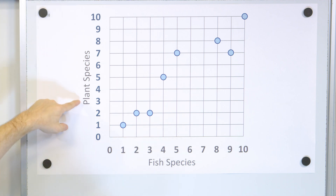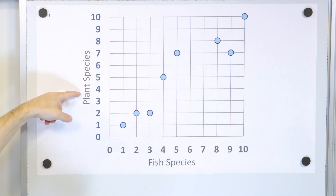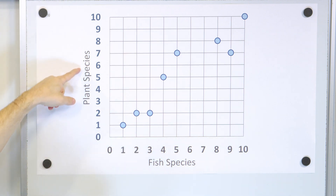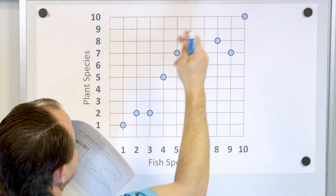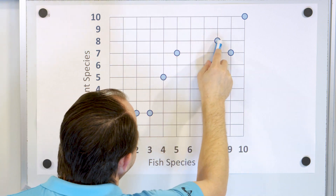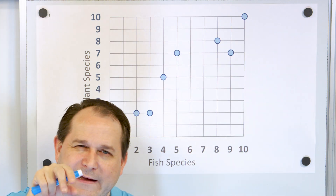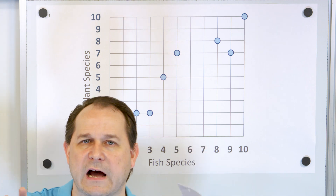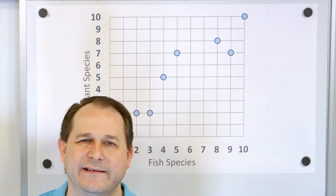Here is a scatter plot. On the x-axis, we have the number of fish species in a pond. And on the y-axis, we have the number of plant species in a pond. So this is called a scatter plot — you can see why, because the points are kind of scattered. We could draw a line to connect these dots, but it kind of hides the actual data points, which is what you want to focus on. So we don't usually draw lines to connect the dots in a scatter plot.